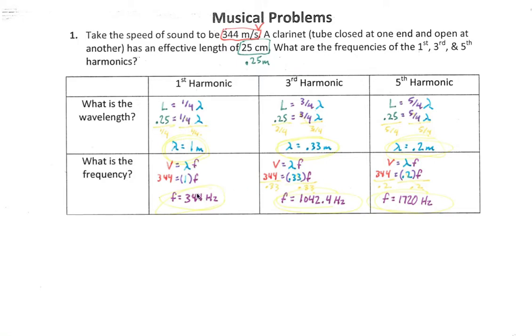Alright, so we have learned a whole bunch this unit about the anatomy of waves, what waves are exactly. We already know the formulas for finding the velocity of a wave, the frequency of a wave, the period of a wavelength, and how to measure wavelength. We also looked at resonance columns and strings. So now we're going to put all our knowledge together for some musical problems. We're going to take the speed of sound to be 344 meters per second, which is pretty standard.